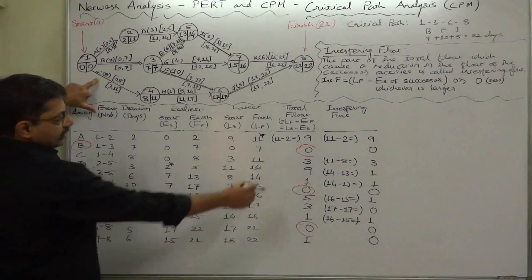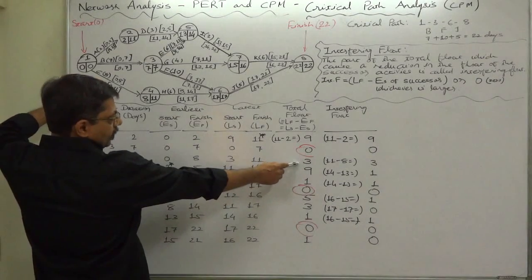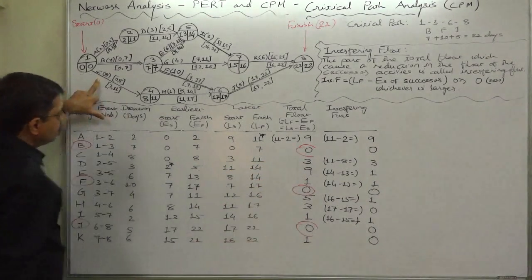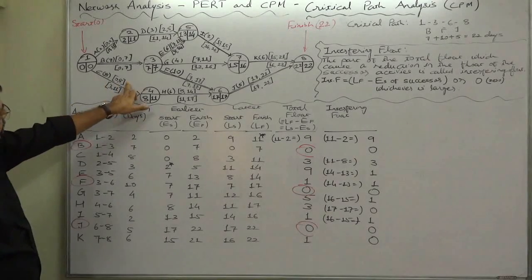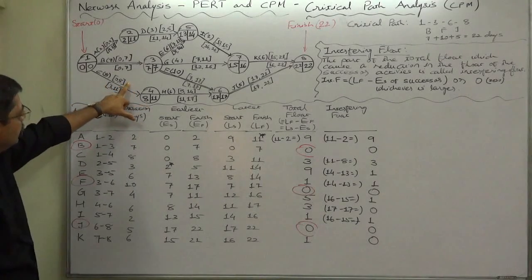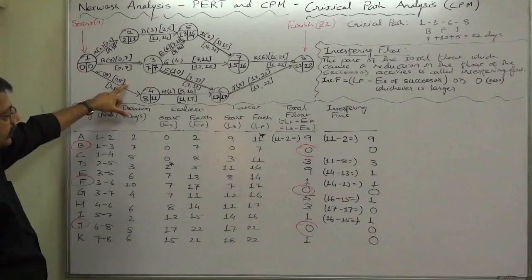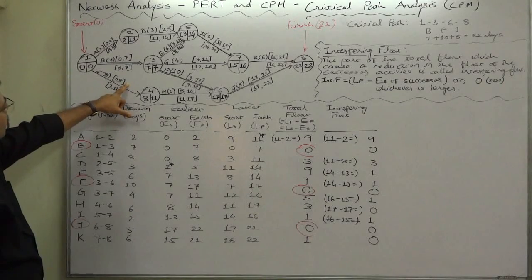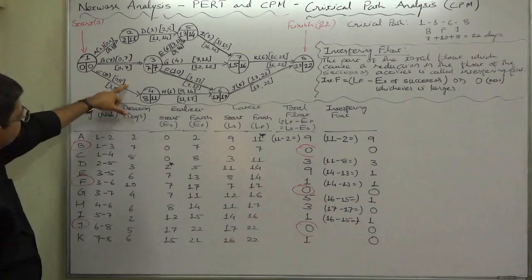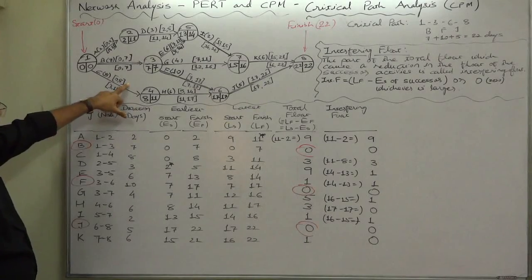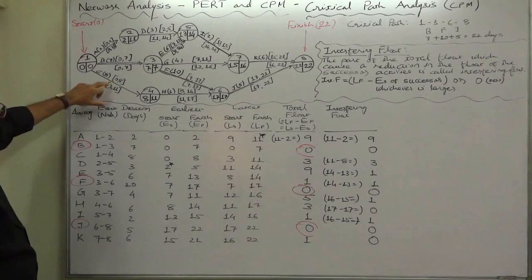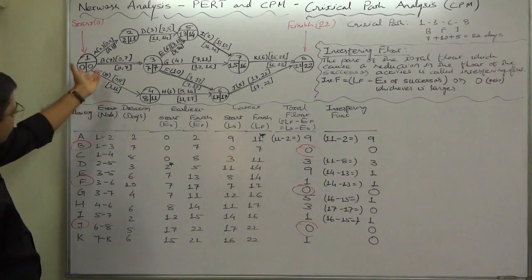C: if we use the total float of 3 in case of C, it will be finished on the 11th day instead of 8th day, because if we start it instead of day 0, we start it after 3 days.